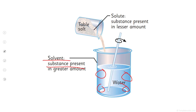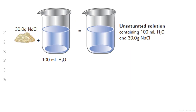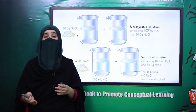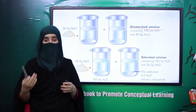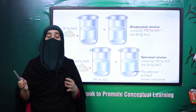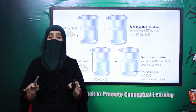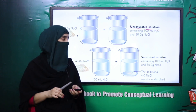Solvent woh substance hain joh hum larger amount mein lete hain. Aur solute woh substance hain joh hum lesser amount mein lete hain. Iske ilawah, joh solution apne andar mazid solute ki amount absorb kar sakta hai, that solution is called unsaturated. Aur woh solution joh mazid solute ko dissolve nahin kar sakta — maximum amount us mein dissolve ho chuki hoti hai in the given amount of solvent — that is a saturated solution.